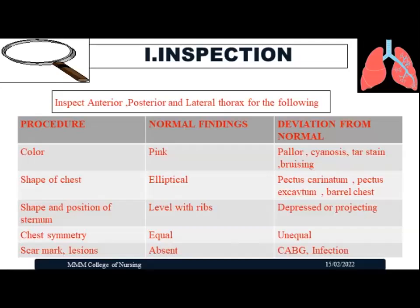Next, assess the shape of the chest. In cross section, the normal chest shape is elliptical. Common deviations include pectus carinatum, pectus excavatum, and barrel chest — all related to changes in the anterior-posterior diameter. Also inspect the shape and position of the sternum, which is the breastbone located in the middle of the chest, connected to the ribs. Normal finding: the sternum is level with the ribs. Abnormal: sternum is depressed or projecting.